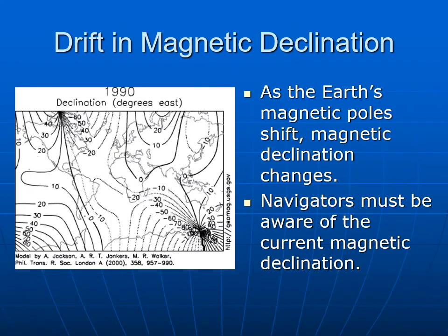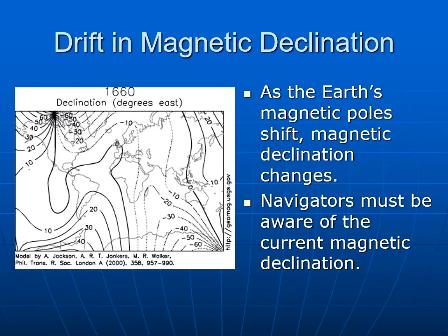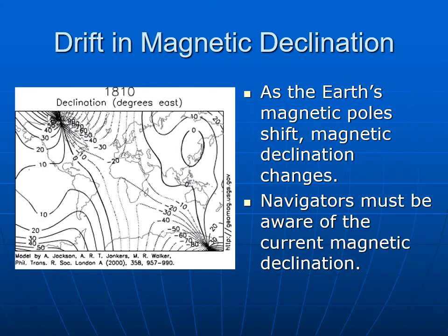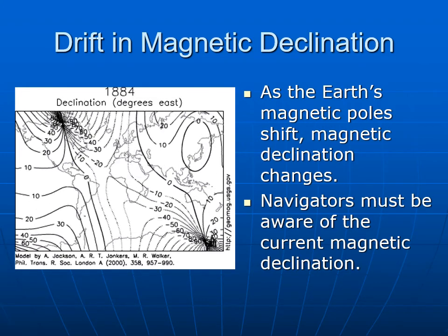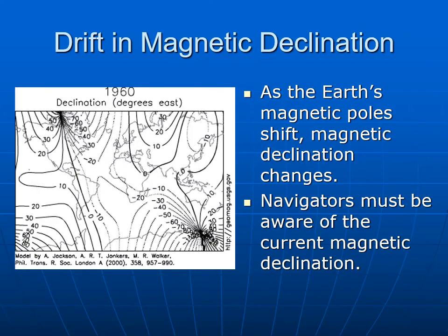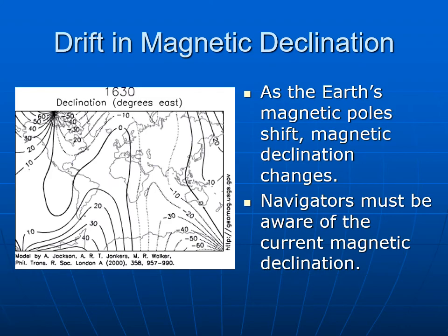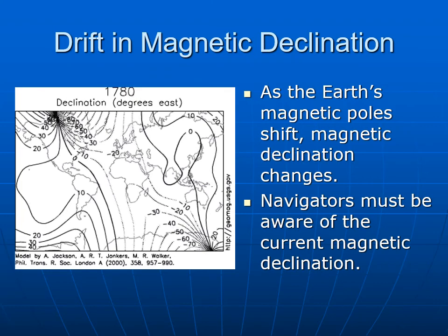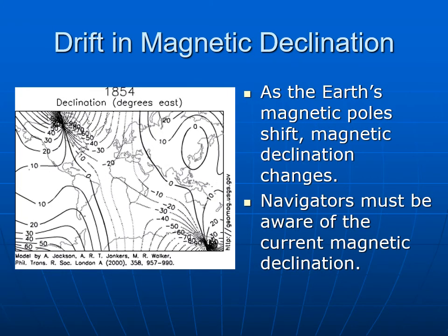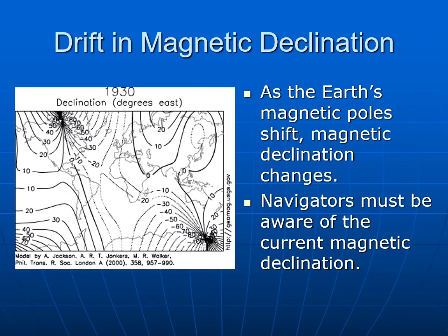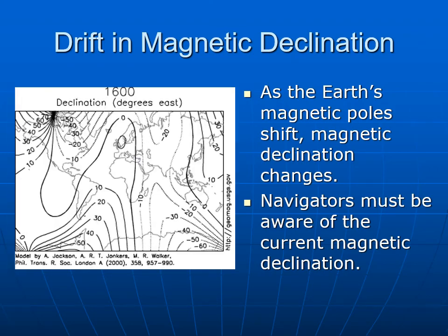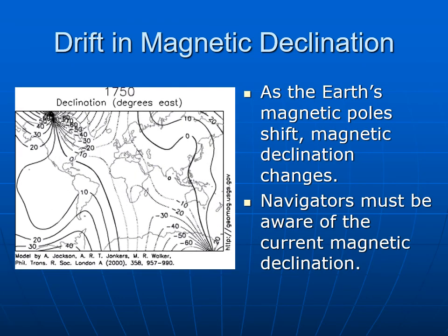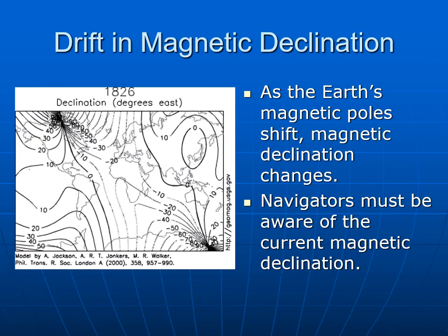As the magnetic field gradually shifts, compasses no longer point in the exact direction they're supposed to, and that needs to be adjusted for. Interestingly, back in the early days of navigation, the zero of declination ran right through Europe. In the 1700s and 1800s it was quite large, and now it's drifting back closer to zero. So navigators who actually want to use a compass need to know what the current declination is.